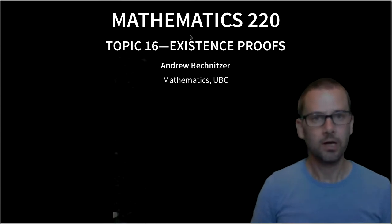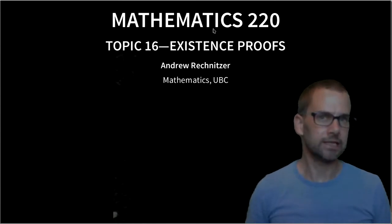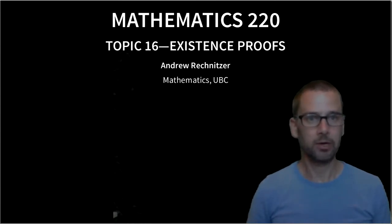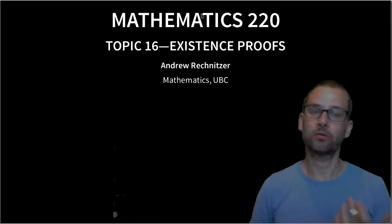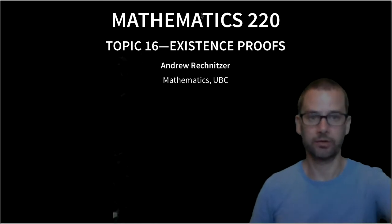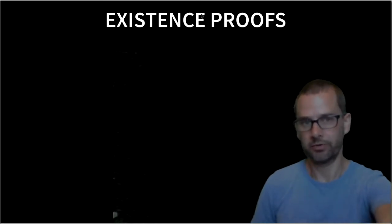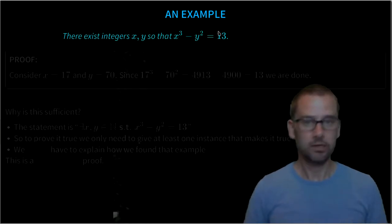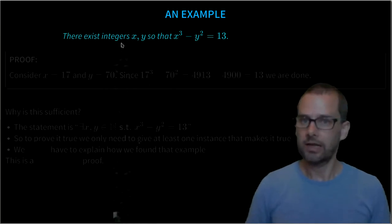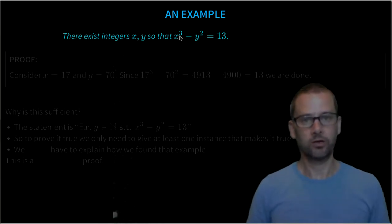Continuing on with quantifiers, something that we're definitely going to see are existence proofs, where we're required to demonstrate that a certain object exists. This is really just proving a quantified statement with that quantifier as an existential quantifier. So let's look at some existence proofs. These can be kind of interesting, and we've seen very simple ones where we just have to show an example. Here's an example of one right now: there exist integers x and y such that x³ - y² = 13.